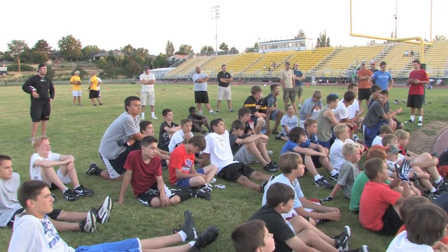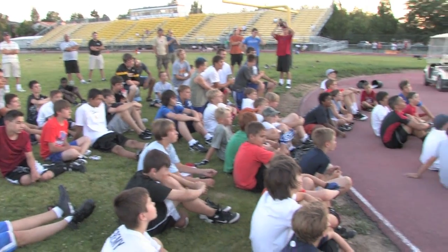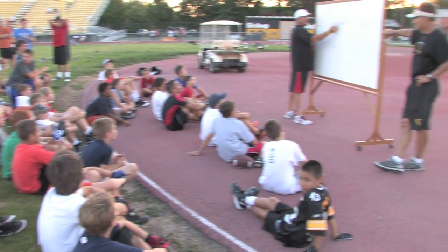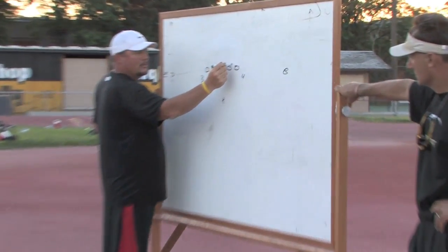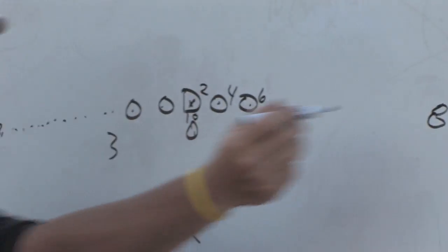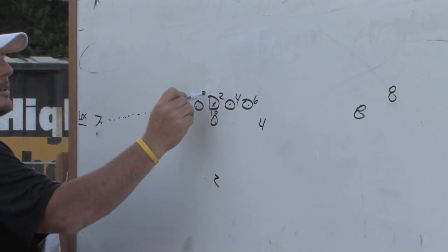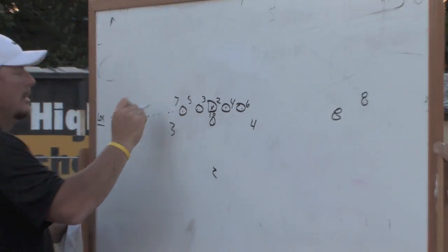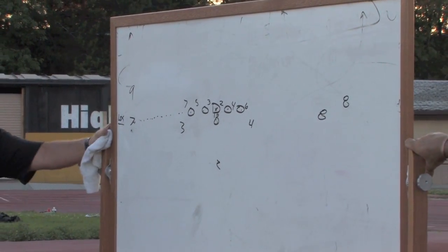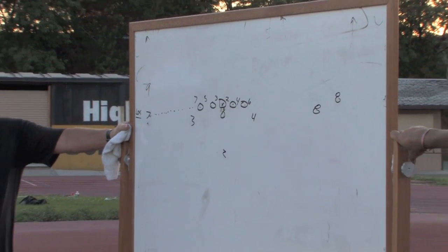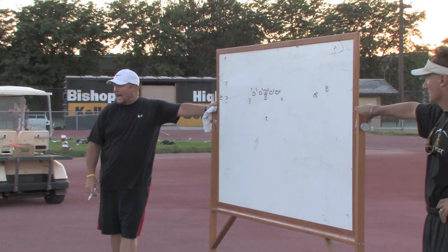Right butt cheek to the center. Left butt cheek. One, two, four, six, eight — three, five, seven, nine. That's where the play is going. Now look at it — don't fall asleep on me. 24 blast. Where's the ball going?